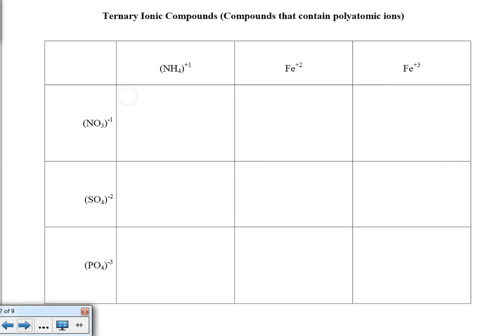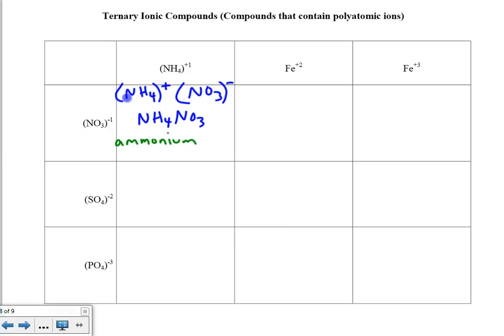A couple more examples to work through: iron 2 and iron 3 ions, and we're also going to work through an example using the ammonium ion, which is one of the few polyatomic ions that is positively charged. Ammonium is the NH₄⁺¹ ion. We match it up with the nitrate minus 1 ion — because it's plus 1 minus 1, we just need one of each. So we write NH₄NO₃. One ammonium ion matches up with one nitrate ion, and we call this ammonium nitrate.